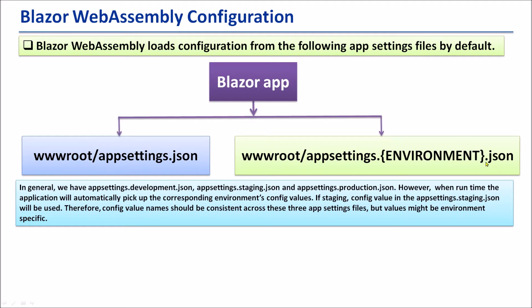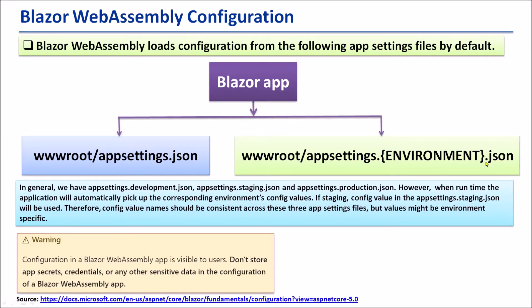Staging config values in appsettings.staging.json will be used in staging, and production config values in appsettings.production.json will be used in production. Therefore, config value names should be consistent across these three appsettings files, but values might be environment-specific. One important warning: configuration in a Blazer WebAssembly application is visible to users. Do not store app secrets, credentials, or any other sensitive data in the configuration of a Blazer WebAssembly application.